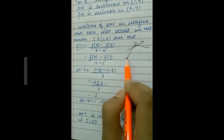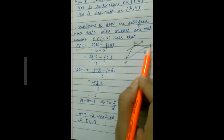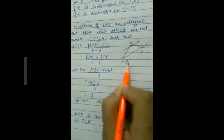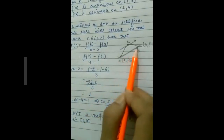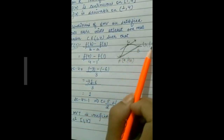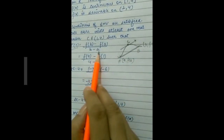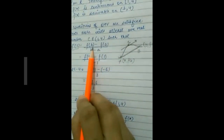f'(c) is the slope of the tangent at point c, and f(b) − f(a) / (b − a) represents the slope of the secant AB, where this point is (b, f(b)) and this point is (a, f(a)). The slope of this line is f(b) − f(a) / (b − a), so both slopes must be equal.